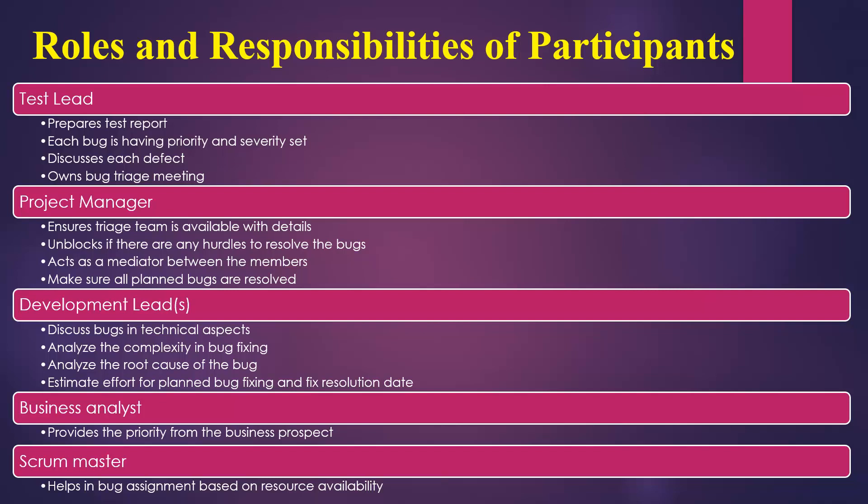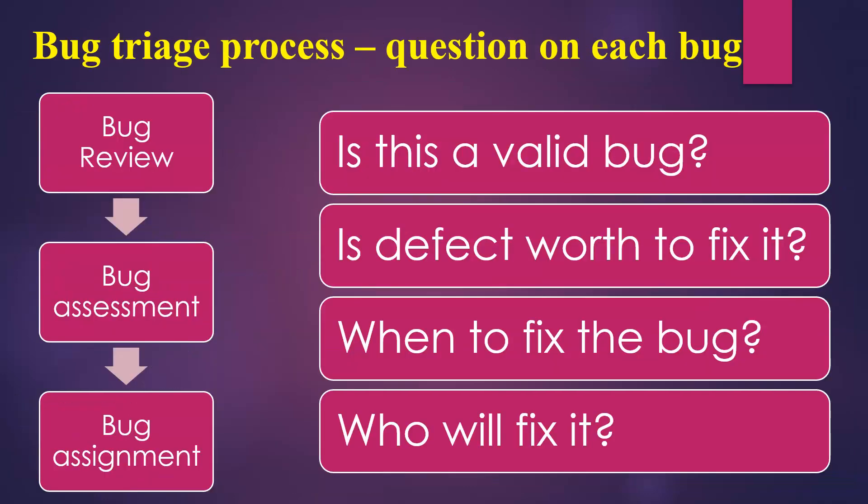The business analyst reviews all the bugs and determines which ones take higher priority based on business value — which bug, when fixed, will most benefit the business. If you are in an agile team, you will also have a scrum master, who helps in bug assignment based on resource availability.